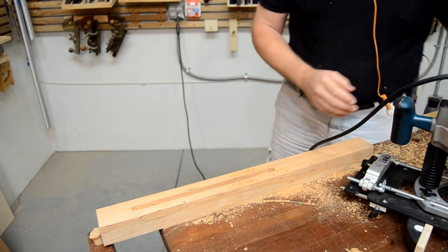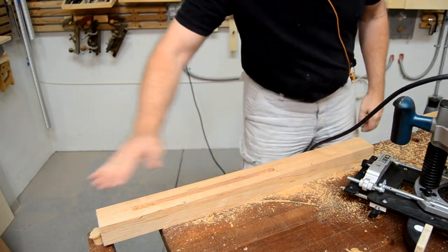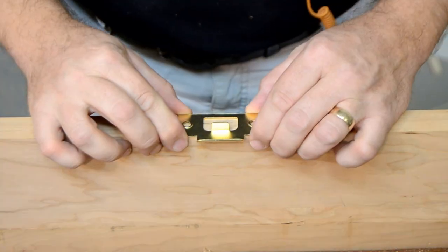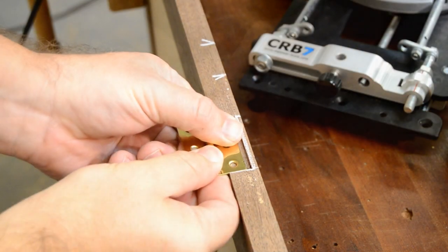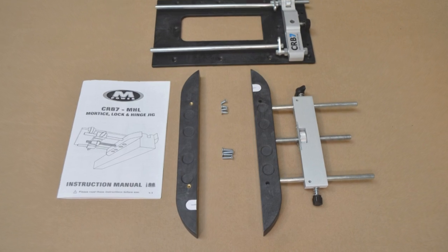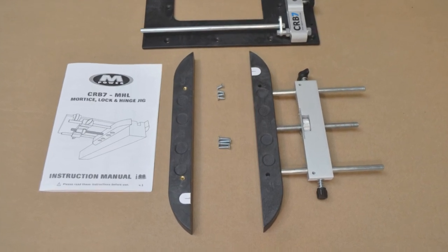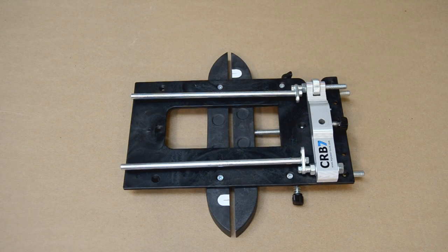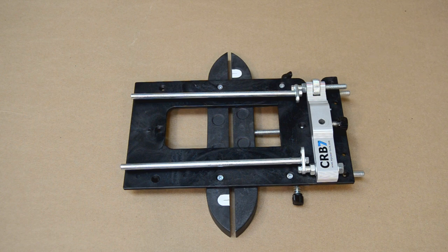When you need to make mortises, whether for joinery, lock sets, or hinges, the MHL accessory for your CRB7 router base lets you make them quickly, easily, and accurately.